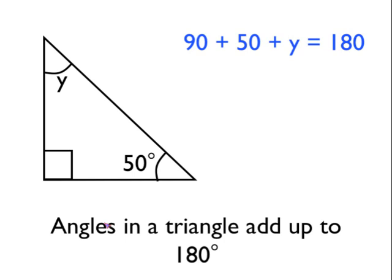So we can say that 90, add 50, add y, must be equal to 180 degrees. Or, to put it another way, imagine if we start with that 180 degrees, we take away 90, take away the 50, what would be left with would be angle y.